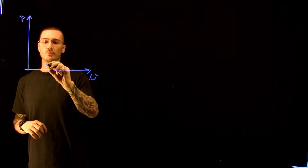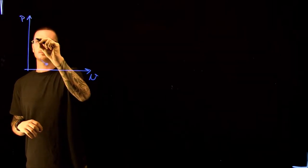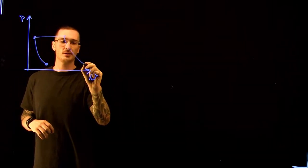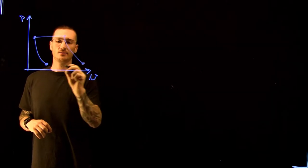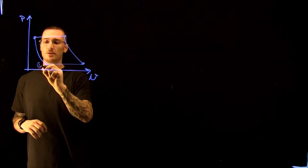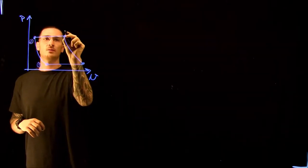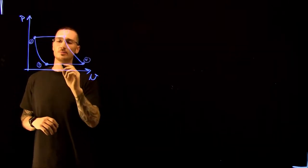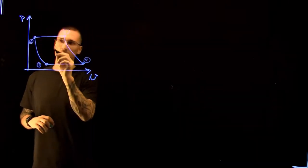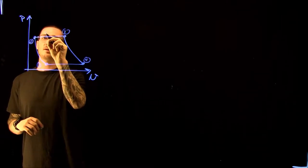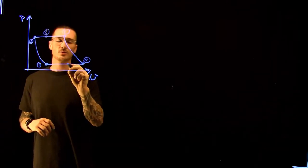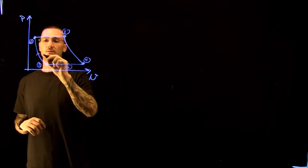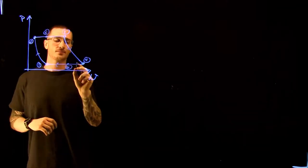We start at point 1, go to point 2, then to point 3, and then 4. So this would be 1, 2, 3, 4 on our regular Brayton cycle, and then in between we'd have some sort of point 5 and point 6. Everything still flows in this direction.